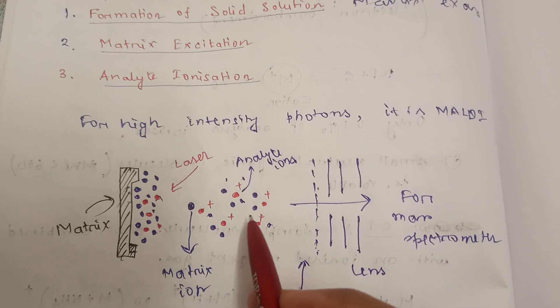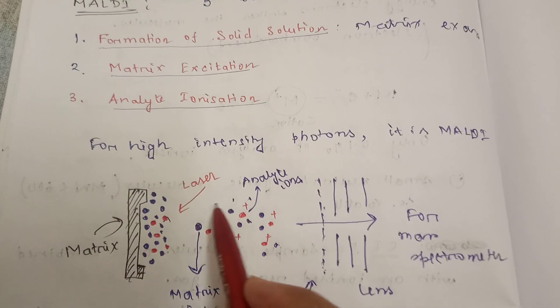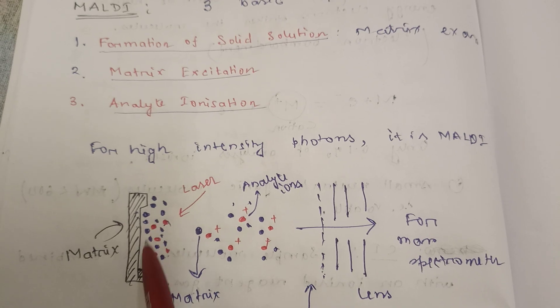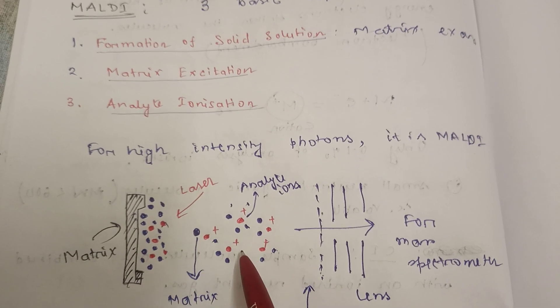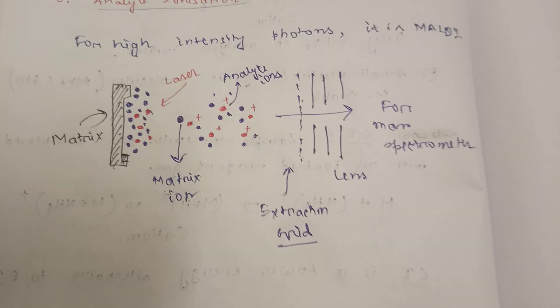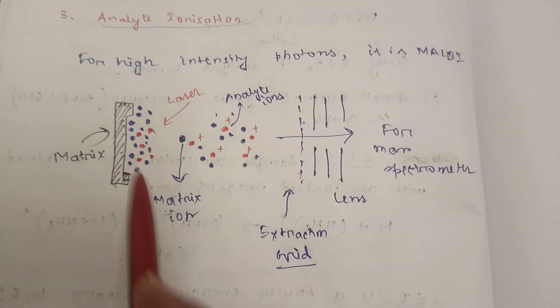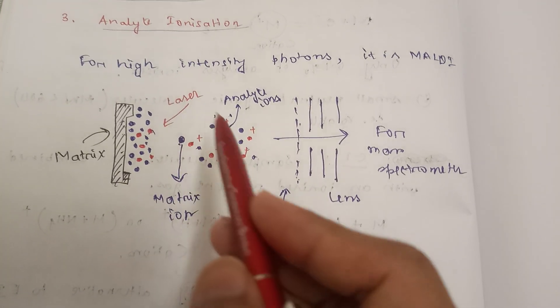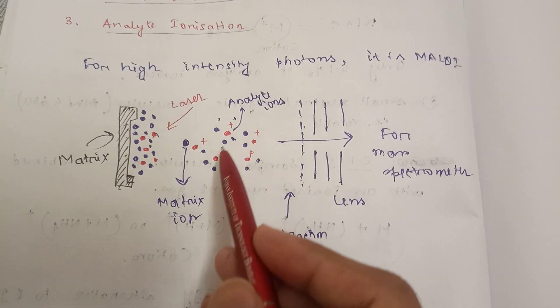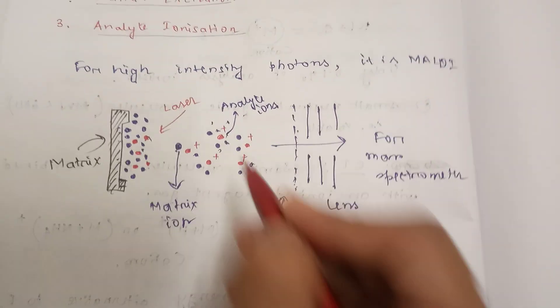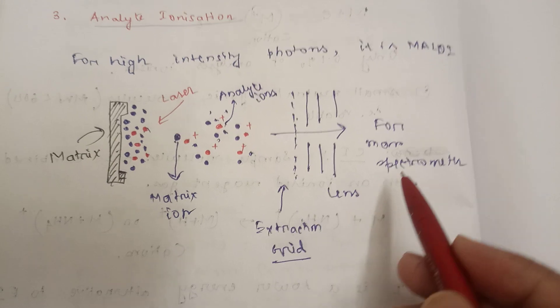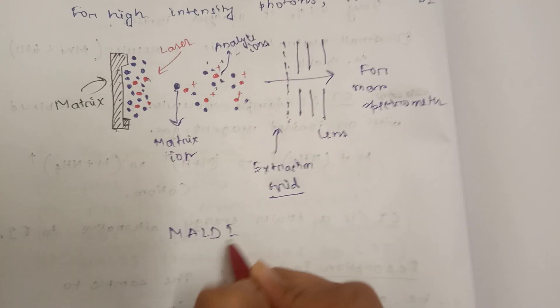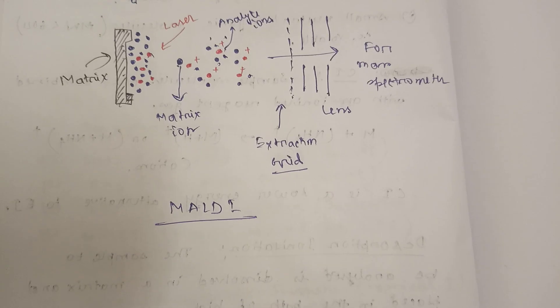You can understand how the ionization happens here. First, matrix excitation happens, then analyte ionization happens. Matrix is excited and it's making the ions. The analyte ions are surrounded by the matrix ions like this, and then it goes for the mass spectrometer for further analysis. This is the general idea of MALDI.